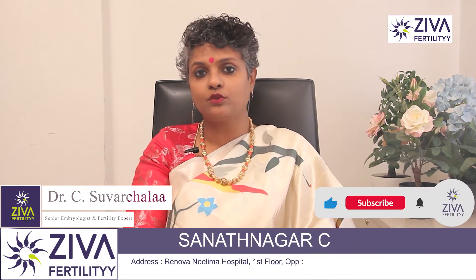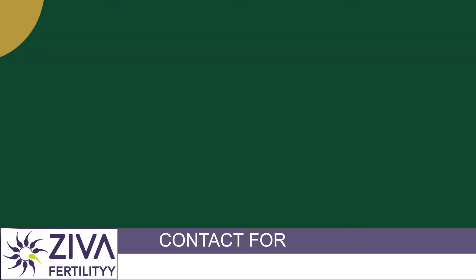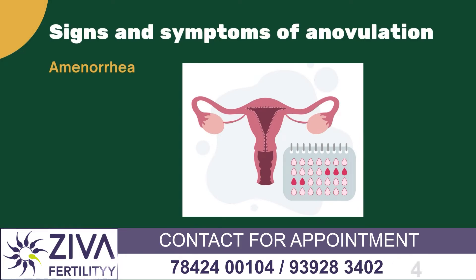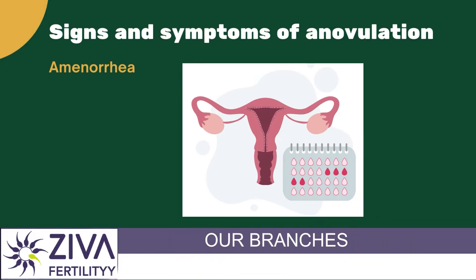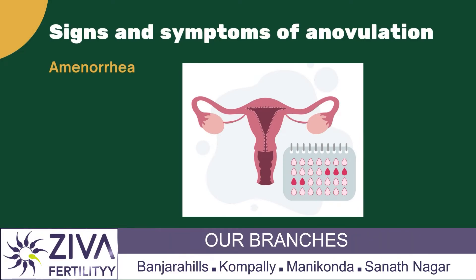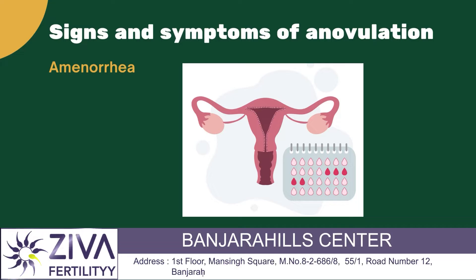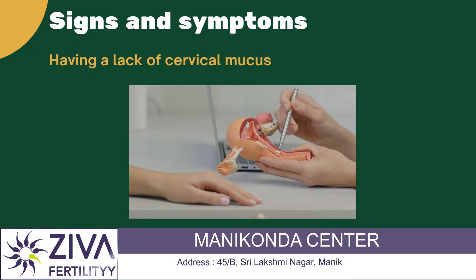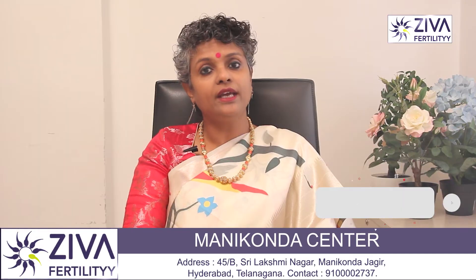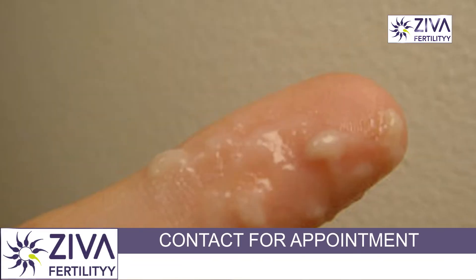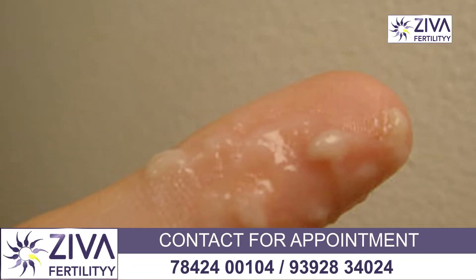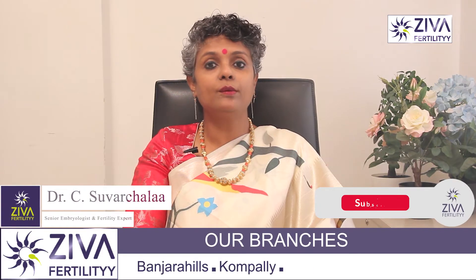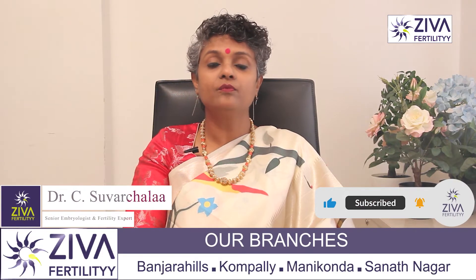Blood loss of less than 20 ml throughout your period is considered a light period. Having amenorrhea — missing one or more periods without being pregnant — could also be a sign of anovulation. Having a lack of cervical mucus is also a sign. Right before and during ovulation, you usually have the most vaginal discharge called cervical mucus, which usually looks like raw egg whites. If you don't have this discharge, you may be experiencing anovulation.